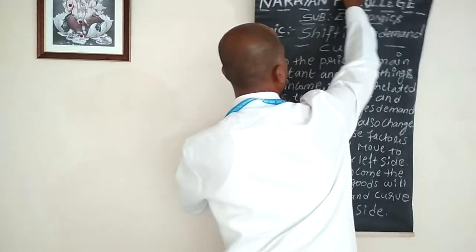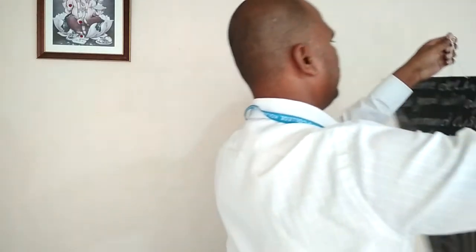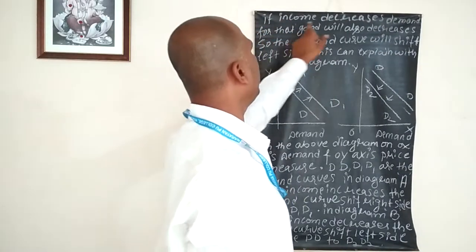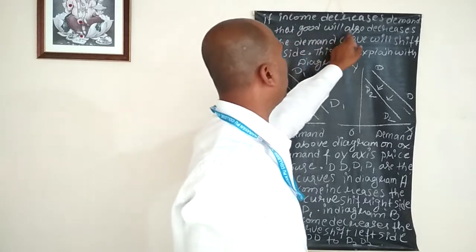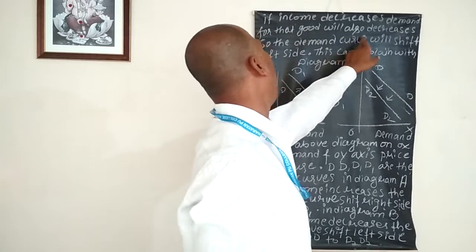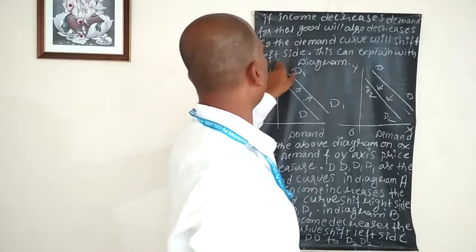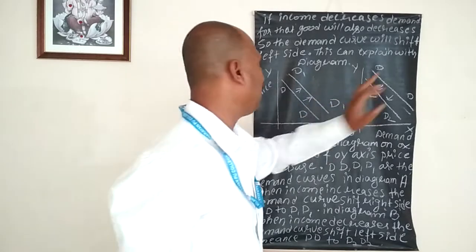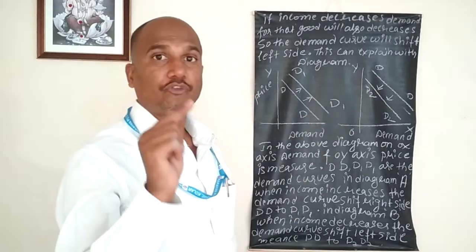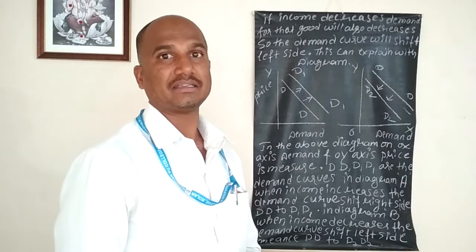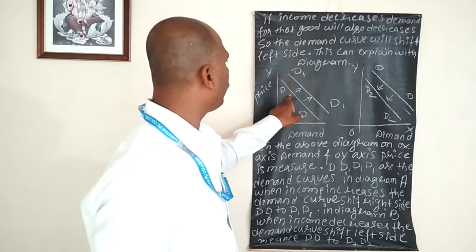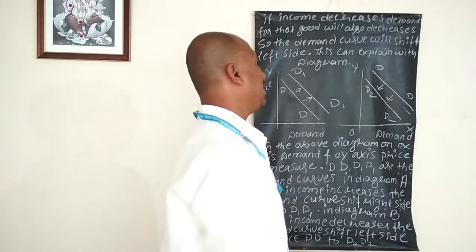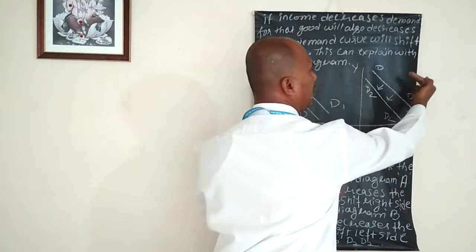Let's understand that concept with the following diagrams — Diagram A and Diagram B. If consumer income increases, the demand curve shifts from left to right. If consumer income decreases, the demand curve shifts from right to left. On the diagrams, the OY-axis measures price and the OX-axis measures quantity demanded.